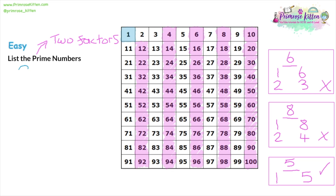Now we'll look at three. Three is a prime number as well — it can be divided by one and by three, so it has two factors. Just like the two times table, everything else in the three times table cannot be a prime number, because those numbers can be divided by one, by themselves, and also by three, which means they have at least three factors. So three is prime, but the rest of the three times table isn't.